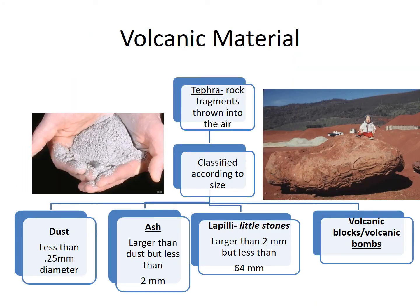Let's look at what volcanic material is. We have tephra, which is rock fragments thrown into the air, and all volcanic material is classified according to size. Dust is less than 0.25 millimeters in diameter. Ash is slightly larger but less than 2 millimeters. Lapillae are little stones larger than 2 millimeters but less than 64 millimeters. And then we have volcanic blocks or volcanic bombs, as seen in this picture. So everything from dust to volcanic blocks is how we categorize volcanic material.